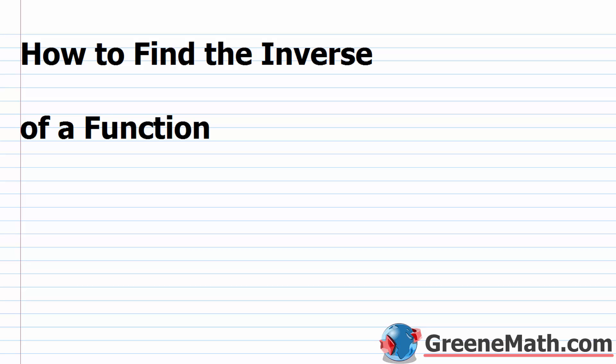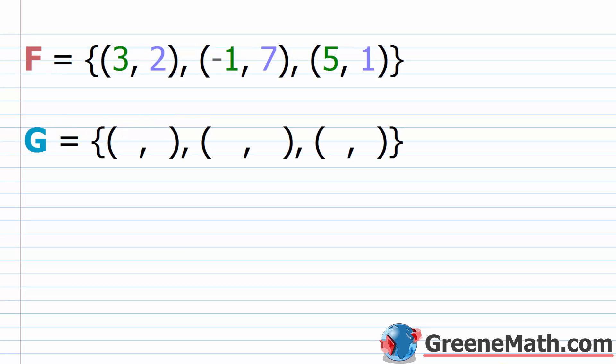In this lesson, we want to talk about how to find the inverse of a function. Over the course of the last two lessons, we talked about how to determine if a function was a one-to-one function, meaning for each x it had one y, and also for each y it had one x. So once we understand that concept, if we have a one-to-one function, we can then find something known as the inverse of that function. When we talk about a function and its inverse, they basically reverse each other.